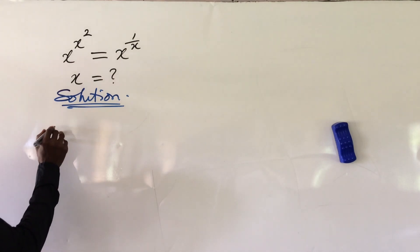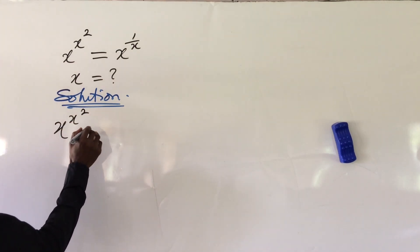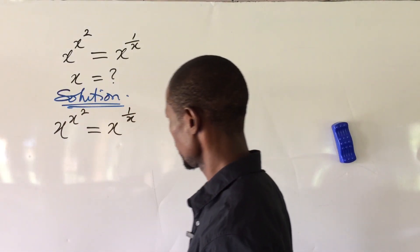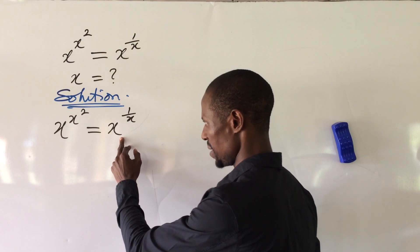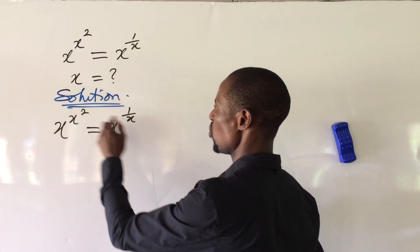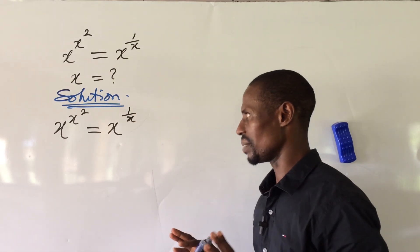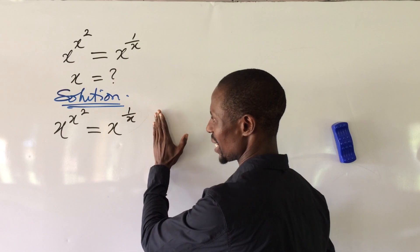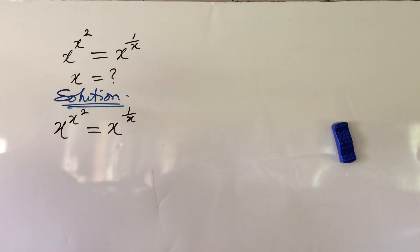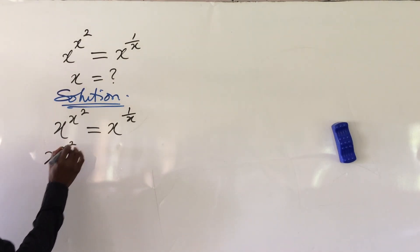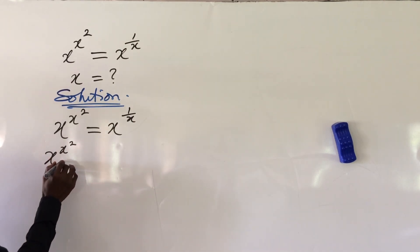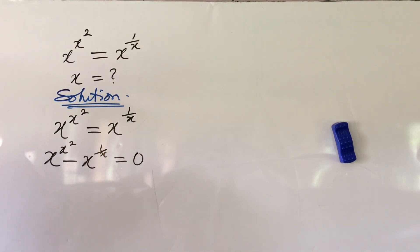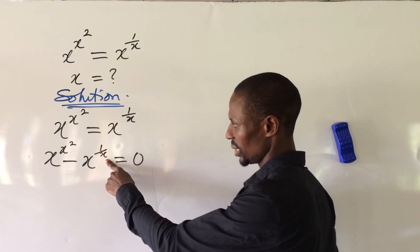We put down the question: x to the power of x raised to the power of 2, equal to x to the power of 1 over x. Now if you look at this question, since the bases are the same you could cancel out the bases and equate the exponents — that would give you two or three roots. But what we want to do here is move the terms on the right-hand side to the left-hand side. So we get: x to the power of x raised to the power of 2, minus x to the power of 1 over x, equal to zero.